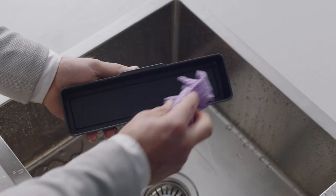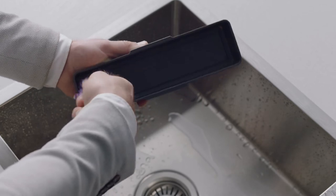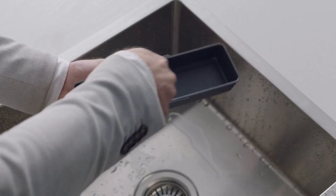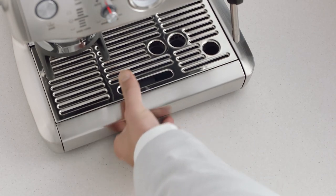The storage tray can also be removed and cleaned with a soft, damp cloth, not abrasive cleaners, pads, or cloths which may scratch the surface. Rinse and dry thoroughly before inserting back into the machine.